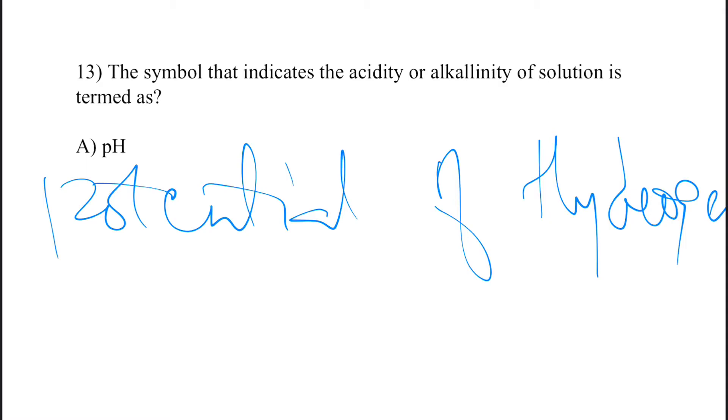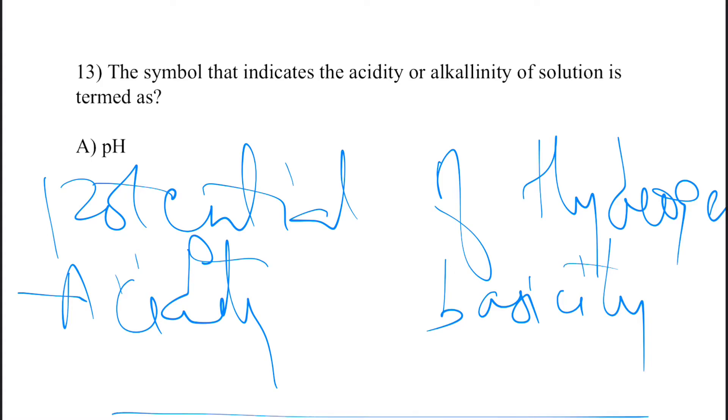It indicates the acidity and basicity of the solution. The pH scale ranges from 0 to 14, with 7 being neutral. Below 7 indicates acidity, and above 7 indicates base.